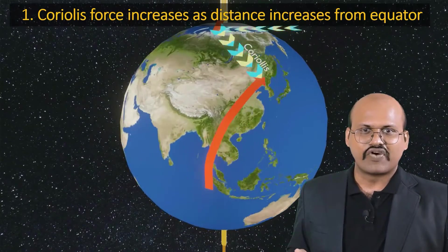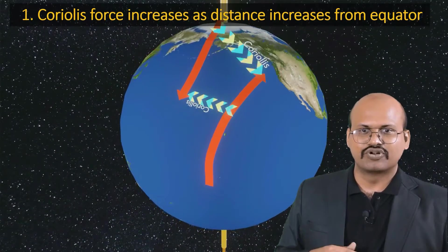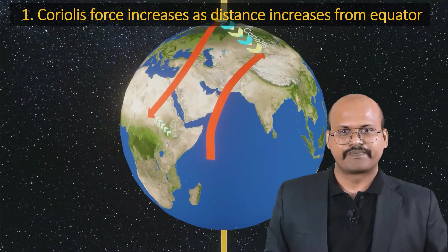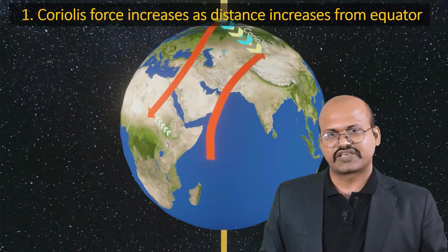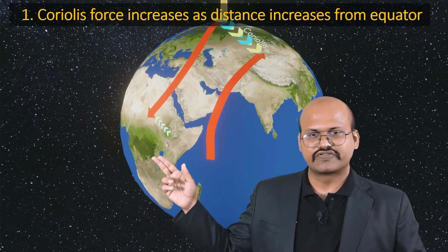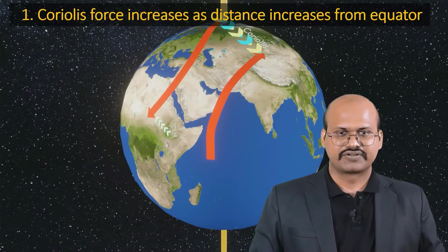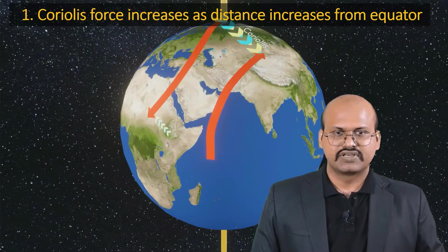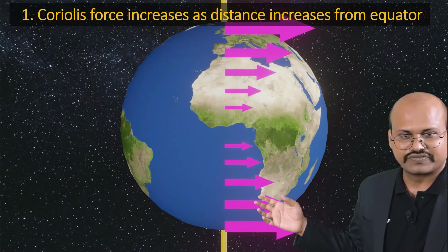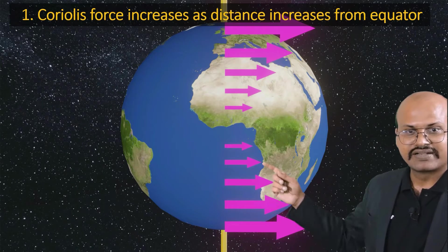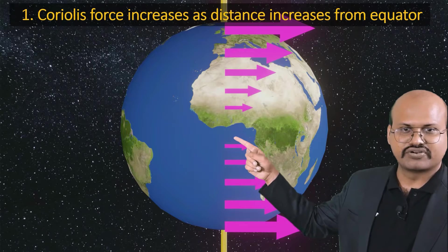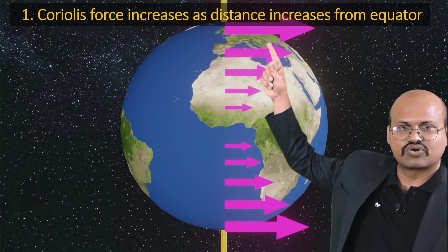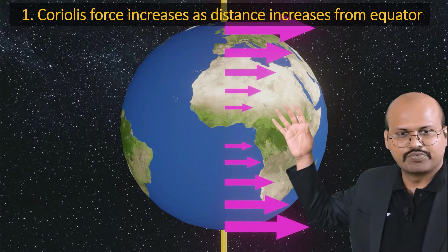When an air particle moves from the north pole towards the equator, the Coriolis force is very high at the north pole but reduces to a very small amount as it approaches the equator. The same happens in the southern hemisphere. This gives us the Coriolis force profile: Coriolis force is zero at the equator and increases as we move to higher latitudes in both hemispheres.